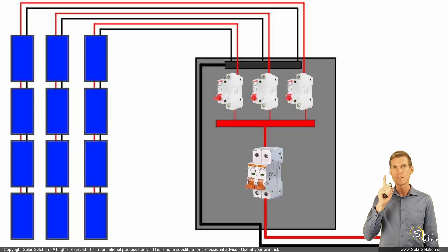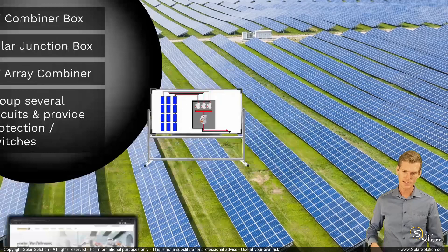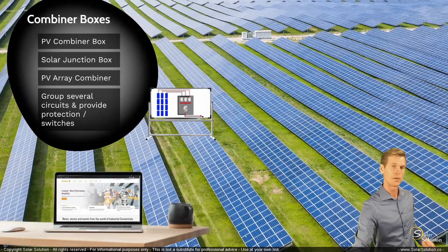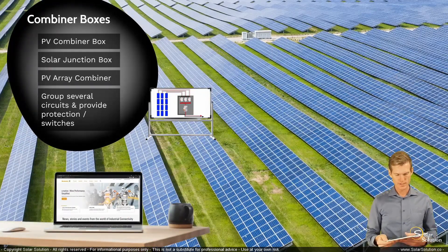Now we have just one single positive and one single negative output from the combiner box going towards the rest of the system. This is all theory, of course, so let's go online and look at a practical example of a combiner box that's available on the market.